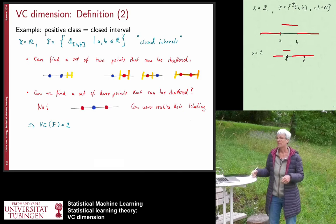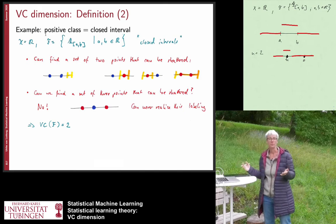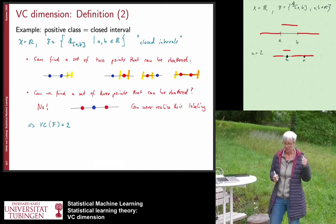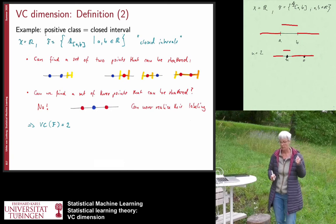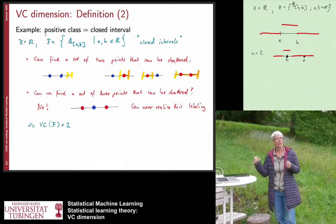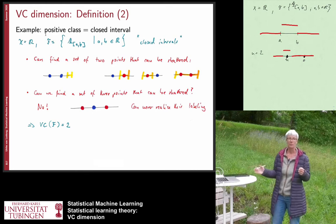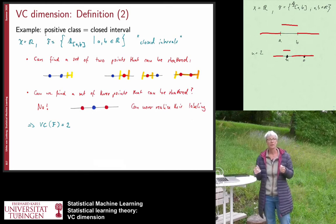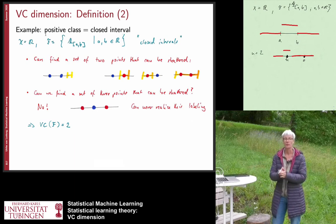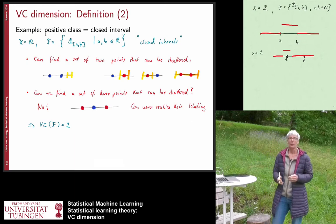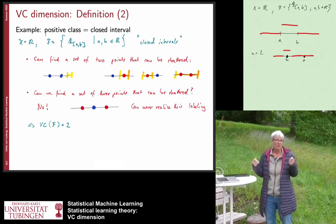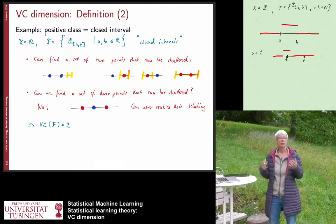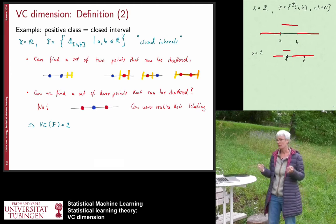This means the VC dimension has to be at least two. One must be careful here: we do not need to prove that all sets of two points can be shattered. As soon as we find one dataset of size n that can be shattered, we know the VC dimension needs to be larger than that. We just need to find one such dataset for each n.